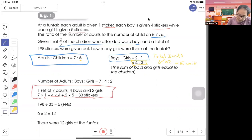You see that total of 198 stickers were given out. So 198 divided by 33, you know that there are 6 sets. 1 set has 2 girls, so 6 times 2, there were 12 girls at the fun fair.